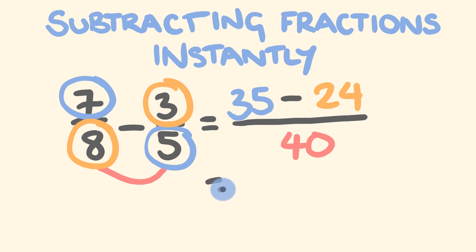What have we got here? So let's see. Thirty-five take away twenty-four is equal to eleven. Eleven over forty. There's our answer. Now look, if you want to go through this,